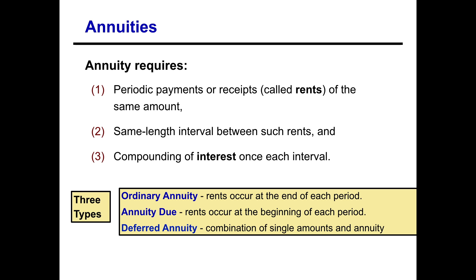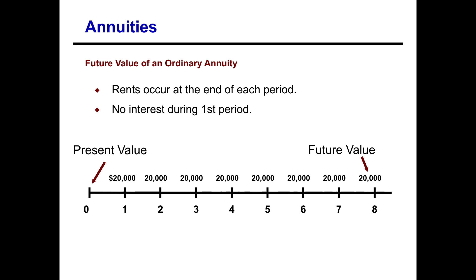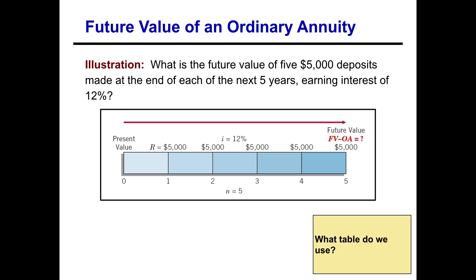Let's start our discussion with the future value of an ordinary annuity, where the rents occur at the end of each period. Looking at our timeline, you can see that we make our first payment at the end of year one, then our second at the end of year two, and so on. There's no interest earned or incurred during that first year, and the last payment is made at the end of the last year.